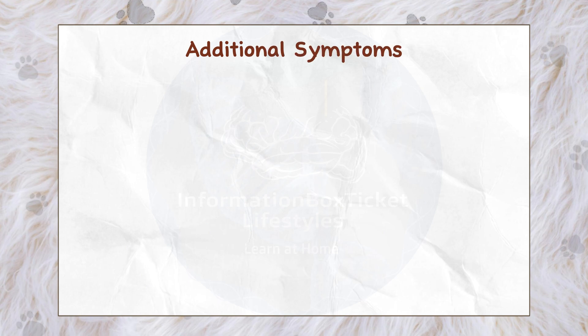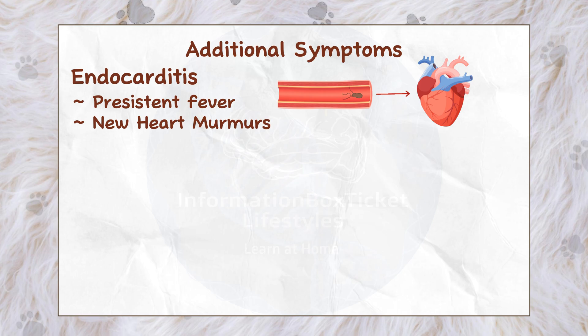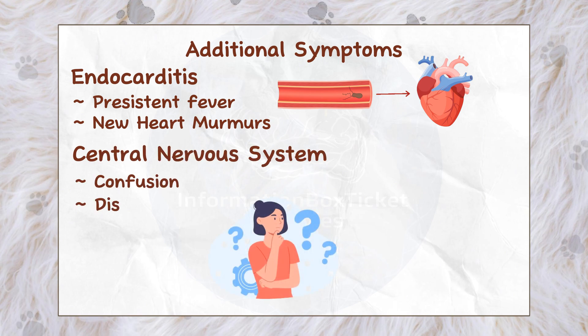Additional symptoms may occur when the bacteria move to the circulation and then to other organs, creating complications. For example, if it enters the heart, it may develop endocarditis, with symptoms including persistent fever and new heart murmurs upon physical examination. Alternatively, bacterial infection of the central nervous system can cause confusion, disorientation, and seizures.